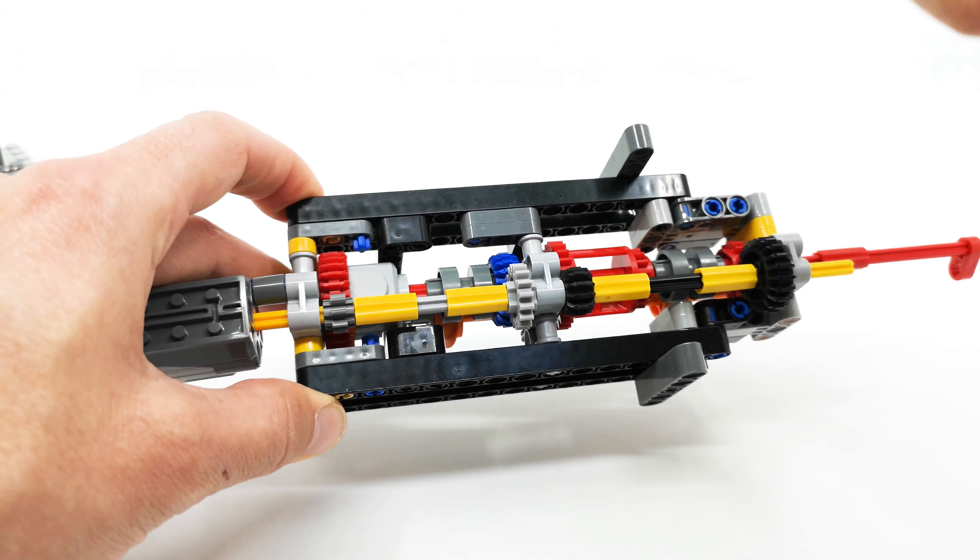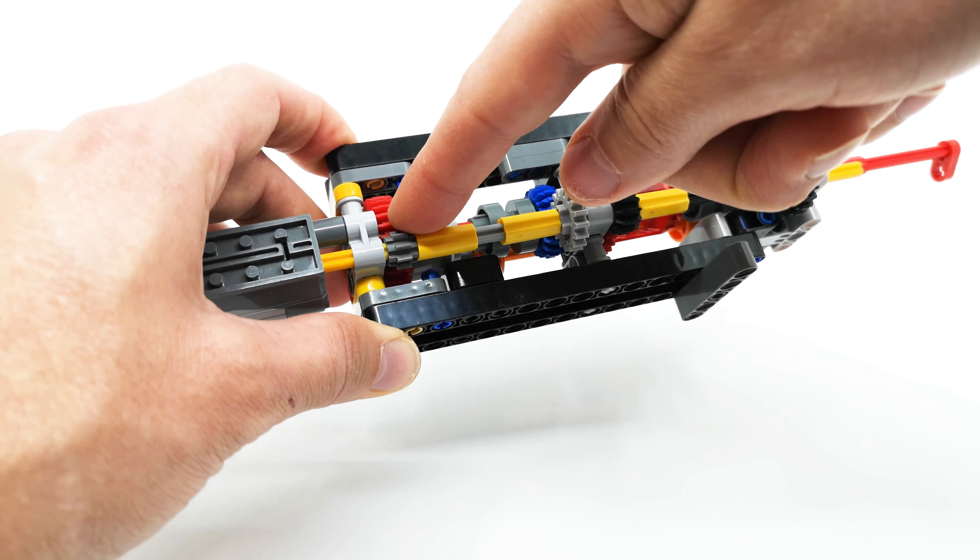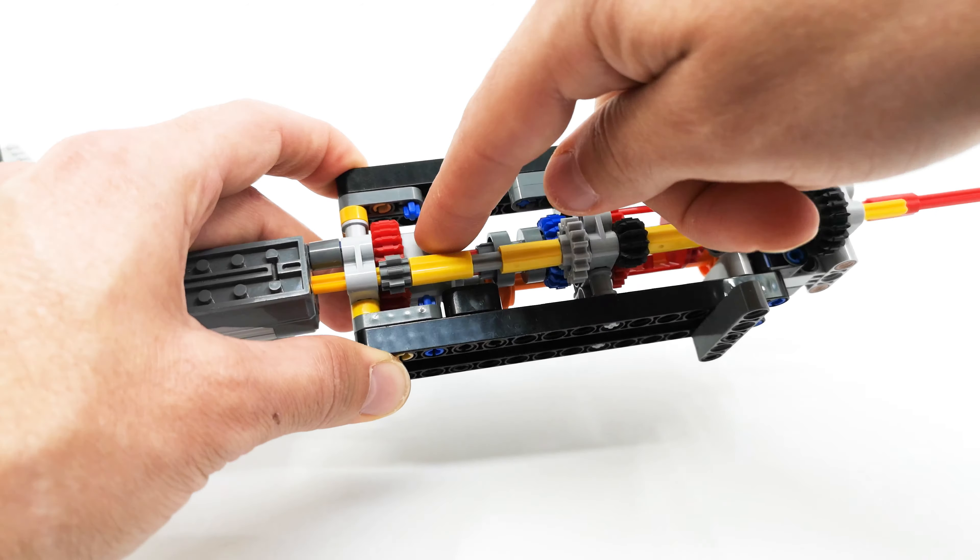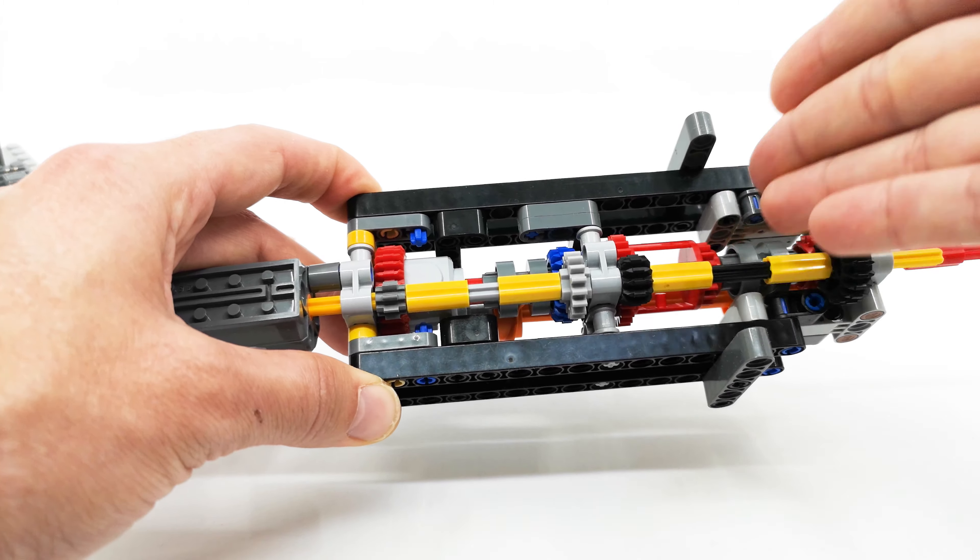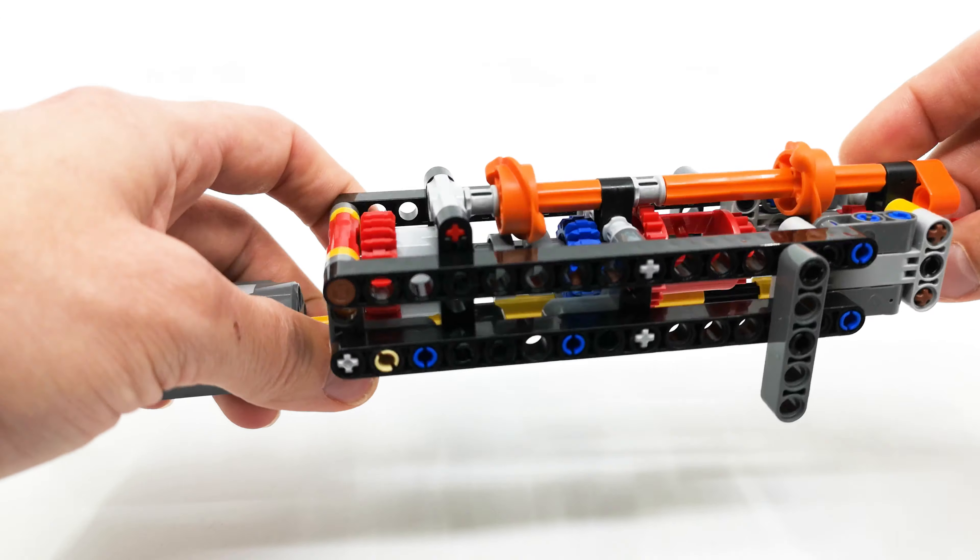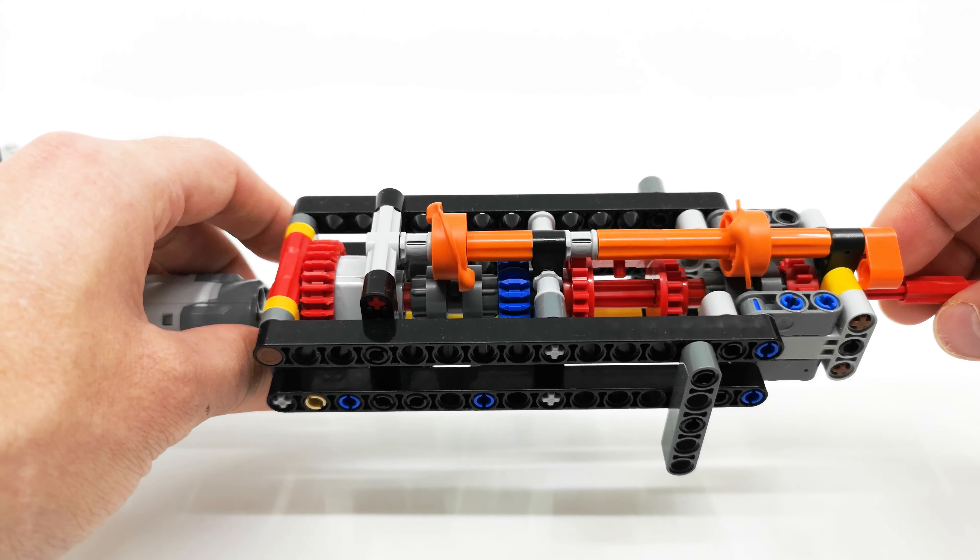It would be perfect if LEGO would actually introduce a 24-tooth clutch gear and a 28-tooth clutch gear that would reduce the gearbox size by at least 3 and 2 or 5 studs in length. So it would be this long. But we have what we have and this was basically the idea I got from checking the Eurobricks forums.